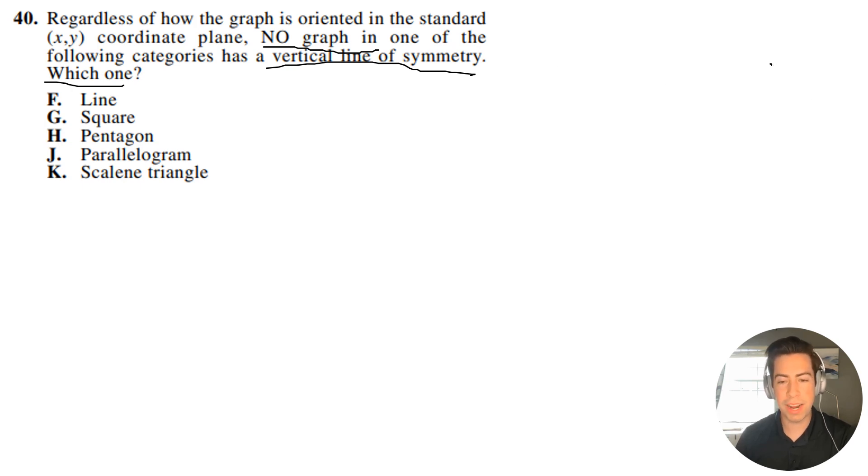You can rotate the shape around, you can move it around, but if it is, by definition, that certain shape, it can have no lines of symmetry through it, specifically vertical lines of symmetry.